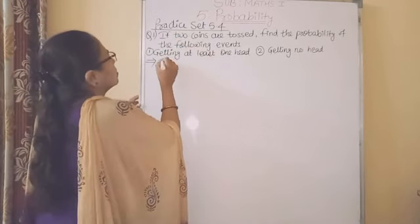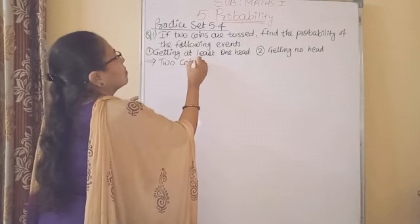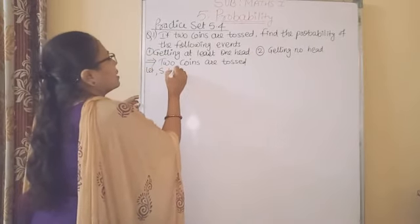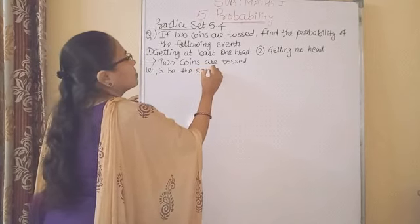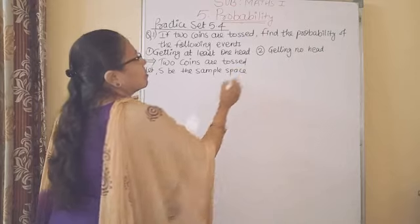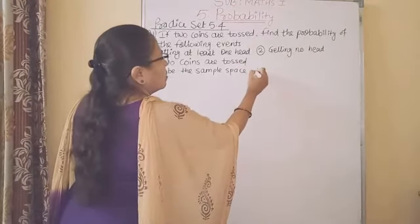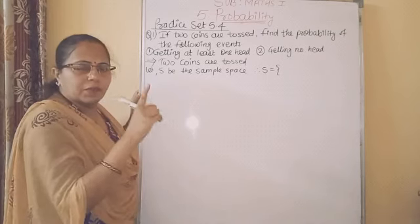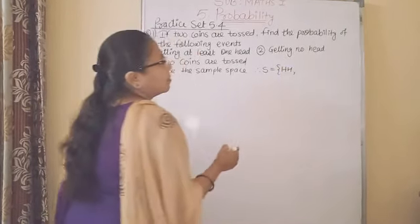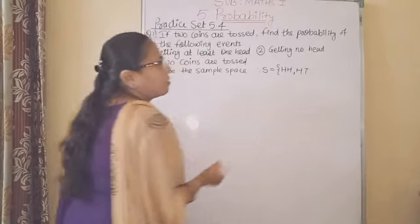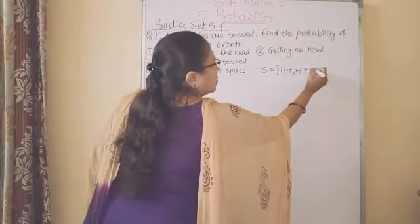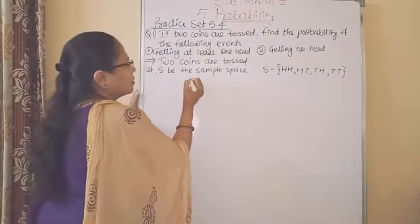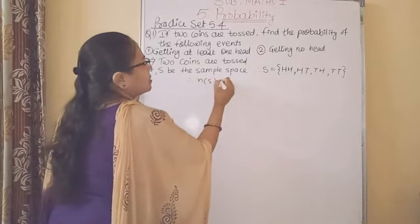Let S be the sample space. Therefore S equals {HH, HT, TH, TT} — the 1st possibility is both coins get head (HH), 1st coin head and 2nd coin tail (HT), 1st coin tail and 2nd coin head (TH), and both coins get tail (TT). Therefore N of S is equal to 4.